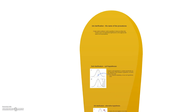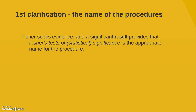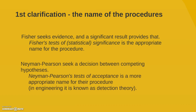The best approach here is to re-conceptualize those functions so that they are less prone to confusion and less prone to appearing as the same. The best way of clearing the field is to use concepts that fit the functions of each theory. We can start with a first clarification regarding the name of the procedures themselves. Fisher seeks evidence, and a significant result provides this evidence — so calling it a test of statistical significance, or simply a test of significance, is an appropriate name. In the case of Neyman-Pearson, they seek a decision between competing hypotheses, so it should be renamed a test of acceptance.